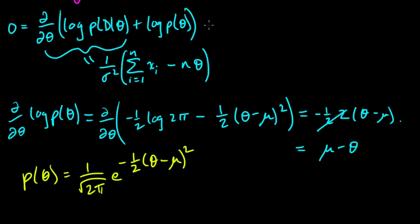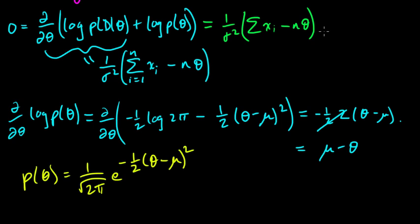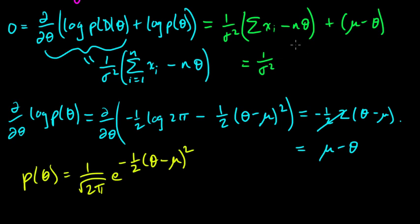Let's plug that back in. We have the derivative of the first part plus the derivative of the second part, so this equals 1 over sigma squared times the sum of xi's minus n theta, plus mu minus theta, all set equal to zero. Now we want to solve for theta, so let's pull together the theta terms.